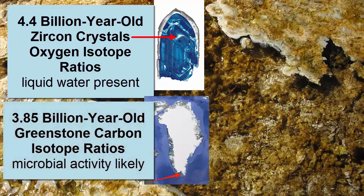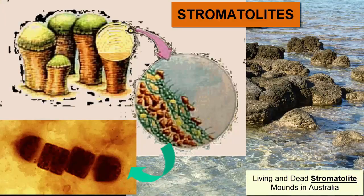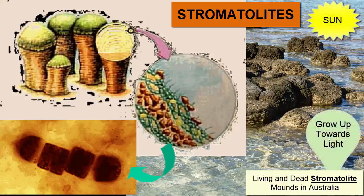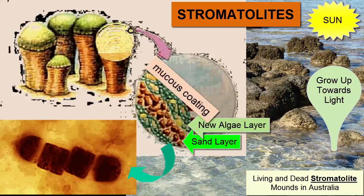A 3.85 billion year old rock from Greenland was found to have carbon isotope ratios suggestive of microbial activity. The first fossil evidence we have are stromatolite mounds found in 3.7 billion year old rocks from Greenland. Stromatolite mounds form by successive layers of photosynthesizing cyanobacterial mats growing in a coastal environment and doming upwards towards the light. Each layer trapped sand within it, ultimately blocking the light, requiring new layers to form atop the old ones. The cyanobacteria are protected from ultraviolet rays by the thick mucus coating in which they live.